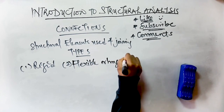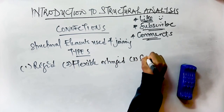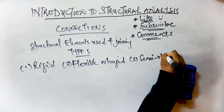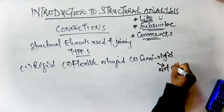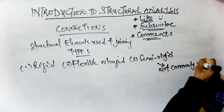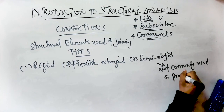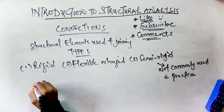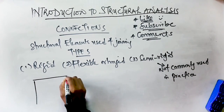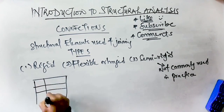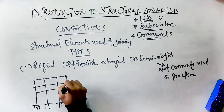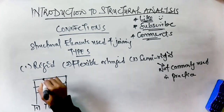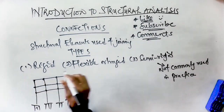The rigid connection is a joint that prevents relative translations and rotations of member ends connected to it. They are usually represented by points at the intersection of members on the line diagram of the structure. If you have a rigid joint, the member will not be able to rotate nor translate.